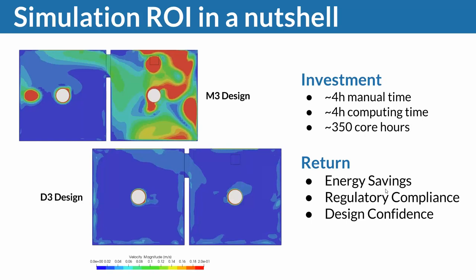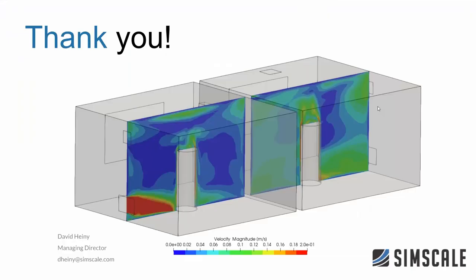Again, this was a case study — there may be applications where mixing ventilation is the better choice. I didn't want to say displacement is always the way to go; it was a general walkthrough. I hope this session gave you a feeling for how CFD is being used in ventilation system design. You can just test it yourself — go to simscale.com, create an account in a few minutes, and you're off to start your own project. There's a free professional trial and a free public community account where you can do public work to learn.